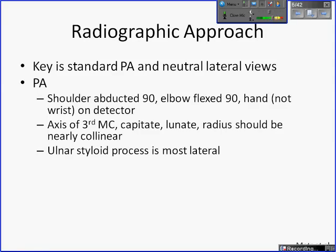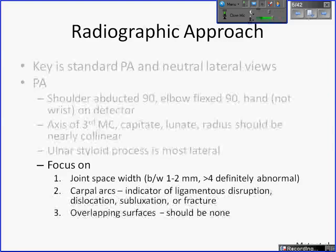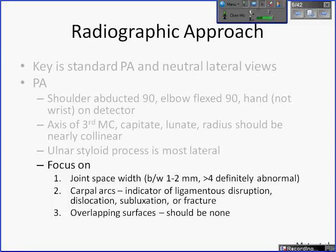For a standard PA view, the shoulder is abducted 90 degrees, the elbow is flexed 90 degrees, and the hand is rested on the plate — not the wrist. If done properly, the axis of the third metacarpal, capitate, lunate, and radius should all be roughly collinear, and the ulnar styloid should be the most lateral aspect. On every PA wrist, joint spacing should be uniform at roughly 1 to 2 millimeters — greater than 4 millimeters is definitely abnormal. The carpal arcs should always be examined; any disruption indicates ligamentous disruption, dislocation, subluxation, or fracture. Any overlapping surfaces are also abnormal on a properly performed PA.